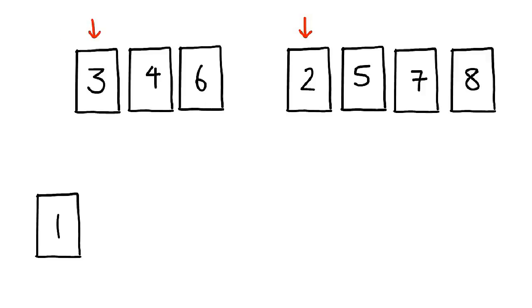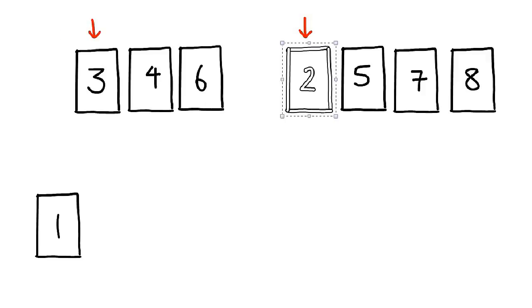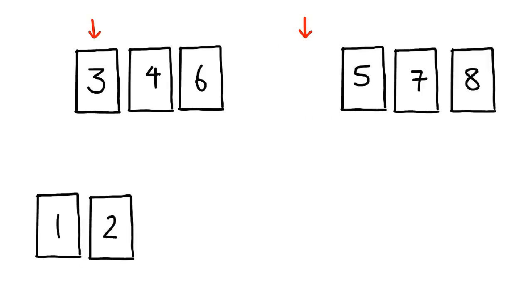We move on and compare the two first items of the sublist again. Once again, we pick the smaller of the two to insert into the new list. The method of actually picking out the smaller item in the two lists will ensure that the new list comes out sorted.